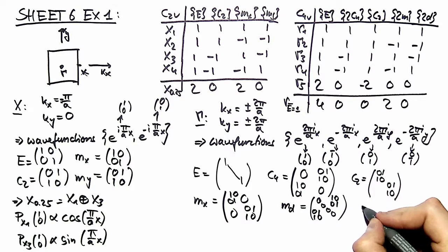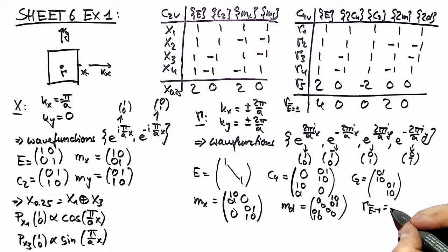And via the decomposition theorem you can deduce that our gamma E equal to 1 representation consists out of gamma 1, gamma 3, and gamma 5.